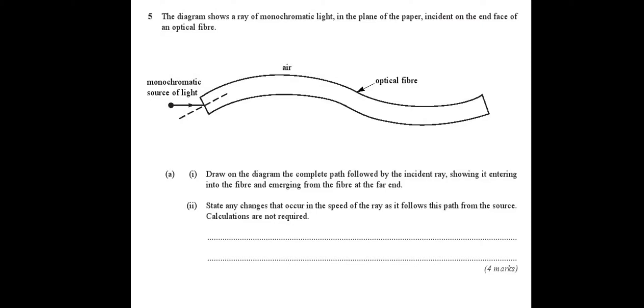So the first thing that we're going to do is draw on the diagram the complete path followed by the incident ray, showing it entering into the fibre and emerging from the fibre at the far end. So as I do this, I'm going to explain this to you. So it starts in the air and it goes into the optical fibre and the optical fibre is obviously more dense than the air. So when it enters a more dense medium, it will refract towards the normal.